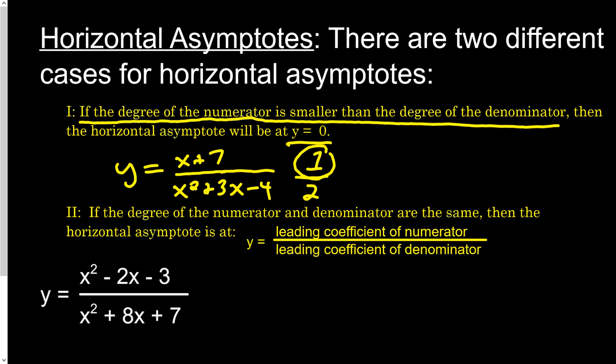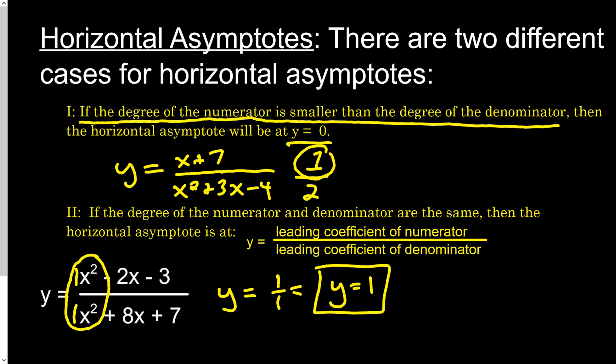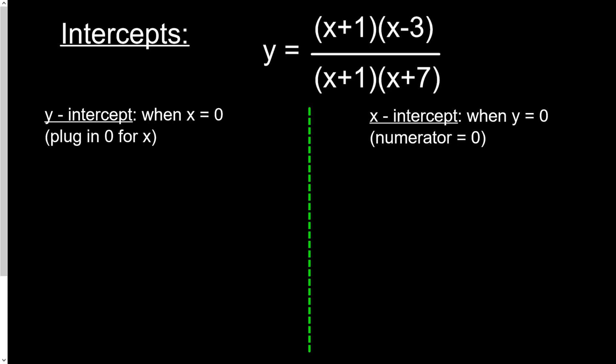Case 2: if the degree of the numerator and denominator are the same, the horizontal asymptote is the leading coefficient of the numerator over the leading coefficient of the denominator. In our example, both top and bottom are x squared — same degree. The leading coefficient on top is 1 and on bottom is also 1. So the horizontal asymptote is y equals 1 over 1, or just y equals 1. If the top degree is larger than the bottom, there is no horizontal asymptote.